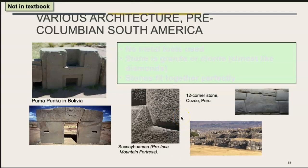In another region of the world, pre-Columbian South America, you see structures where no metal tools were used. The stone is granite or diorite — almost like diamonds — and the stones fit together perfectly. This illustrates that within the same time period, you have different levels and stages of development for civilizations.